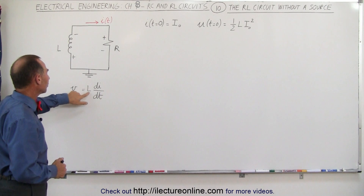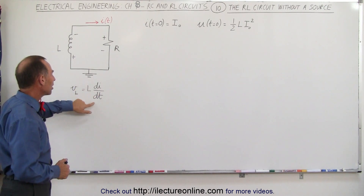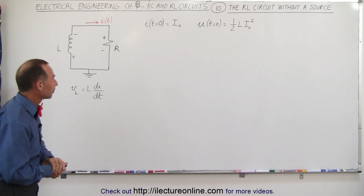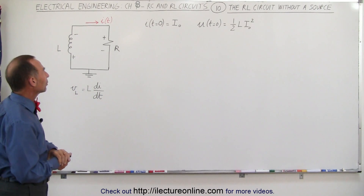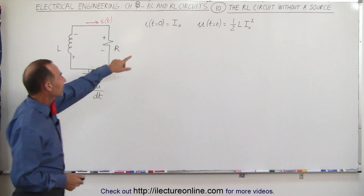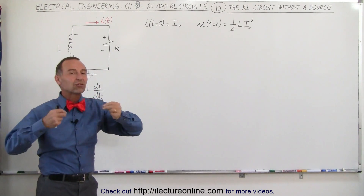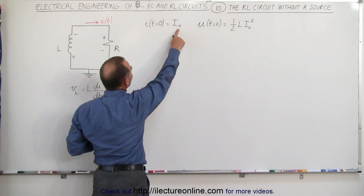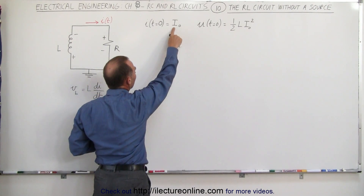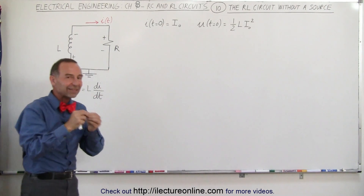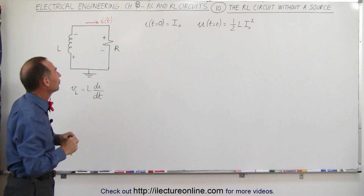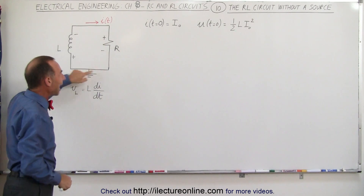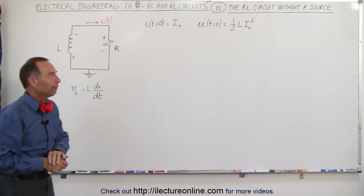The voltage is equal to the inductance times the rate of change with respect to time of the current. When the time is equal to zero, there must be some initial current to the circuit, so we're going to simply call it I sub zero. We use capital I for the constant fixed initial current, and I as a function of time will be the current after time equals zero.